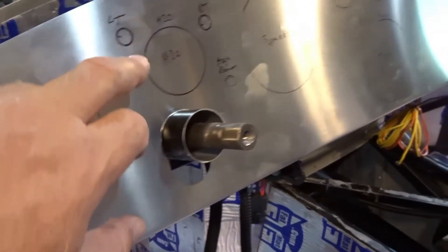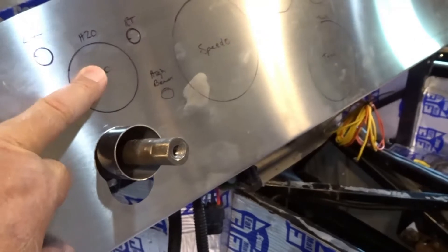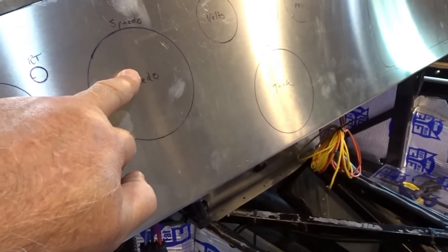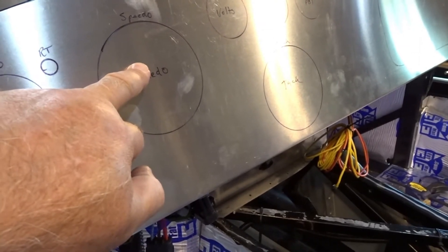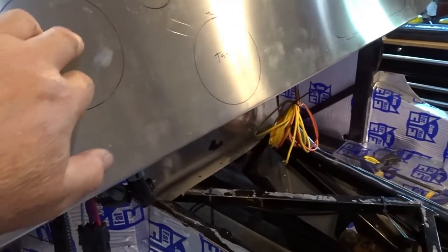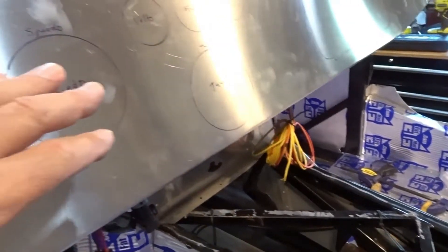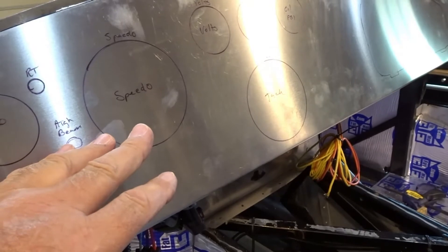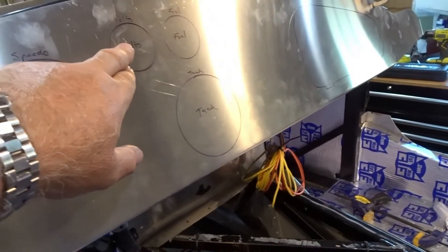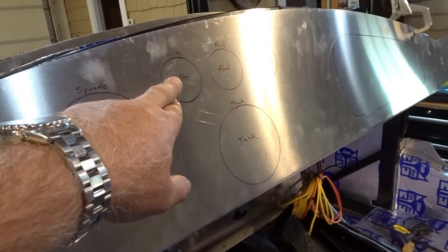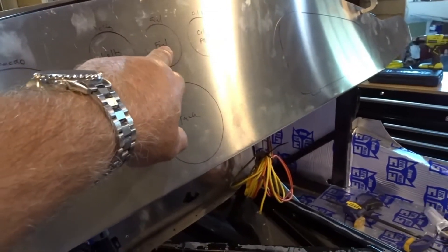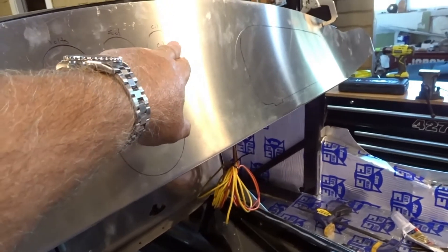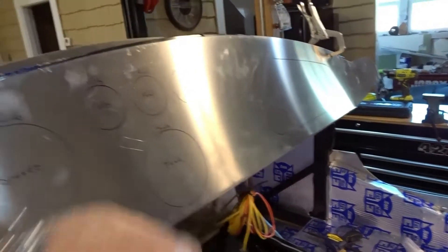We're going to go oil temperature here, water temperature there, speedo, and tach we've reversed. On the actual 427 SE layout, tach should be here, speedo should be here. Michael wants the speedo closer to the steering wheel. So we swap those. And then they show an amp meter here. We have a volt gauge instead. Fuel level gauge there. And then oil pressure at the far end.